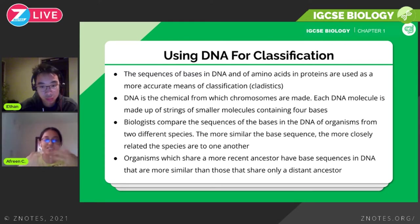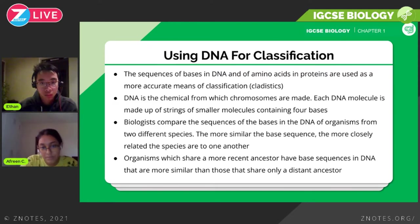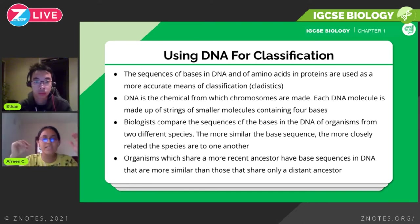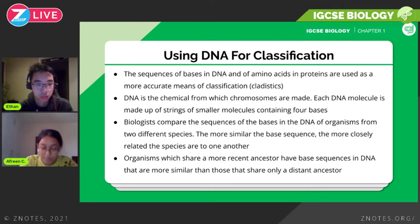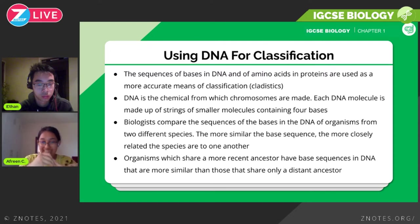For DNA classification, you can use sequences of bases in DNA and amino acids in proteins as a more accurate means of classification. DNA is a chemical from which chromosomes are made; each DNA molecule is made up of strings of small molecules. DNA contains four bases: A, T, C, and G. A always pairs with T, and C always pairs with G — that's just how DNA works.